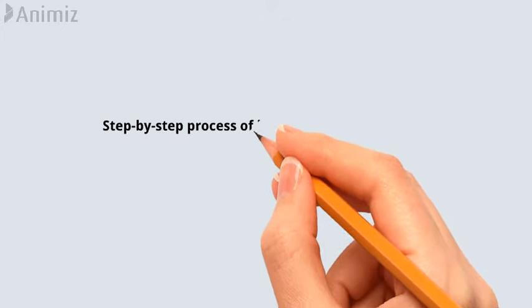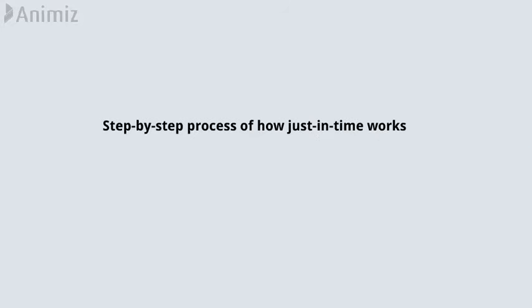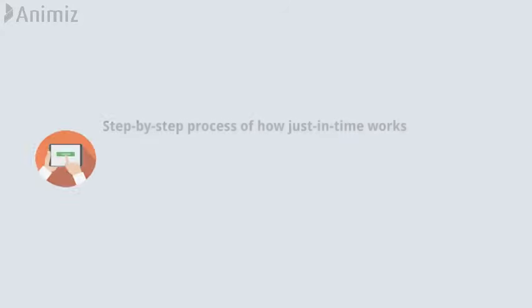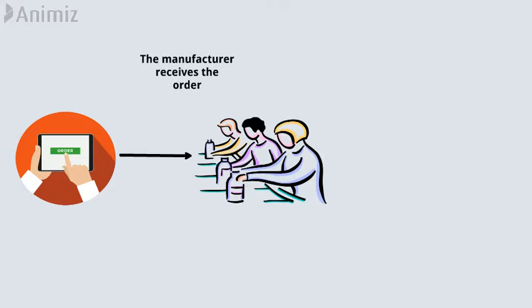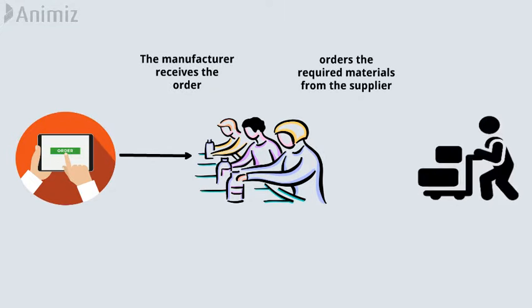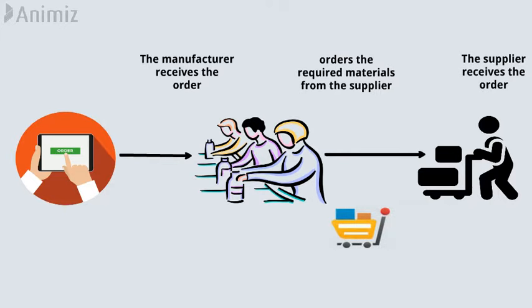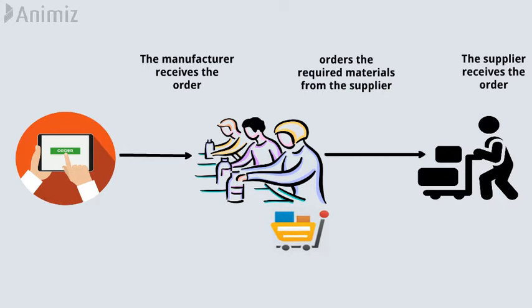Here is the step-by-step process of how Just-in-Time works. The customer places an order. The manufacturer receives the order and then orders the required materials from the supplier to fulfill the order. The supplier receives the order and delivers the required materials to the manufacturer, who then receives them.